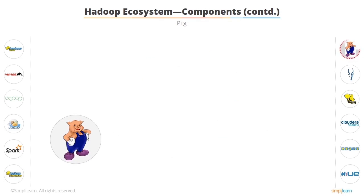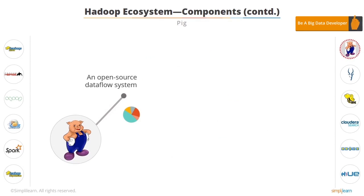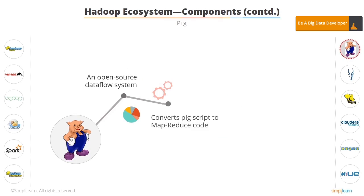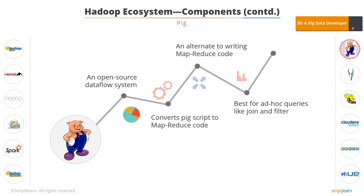After the data is processed, it is analyzed. This can be done by an open-source, high-level dataflow system called Pig, used mainly for analytics. Pig converts its scripts to Map and Reduce code, saving the user from writing complex MapReduce programs. Ad-hoc queries like Filter and Join, which are difficult to perform in MapReduce, can be done easily using Pig.